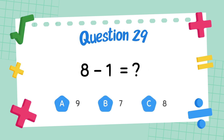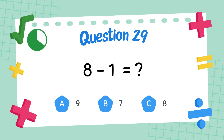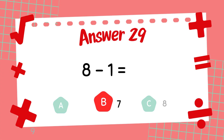What is 9 minus 2? What is 7 minus 2? The answer is 7.